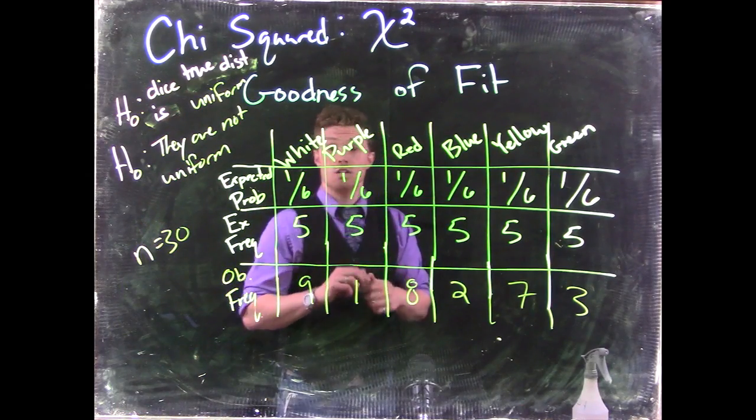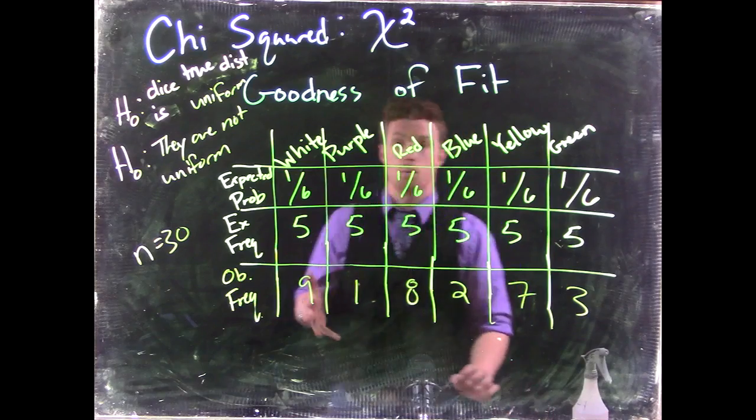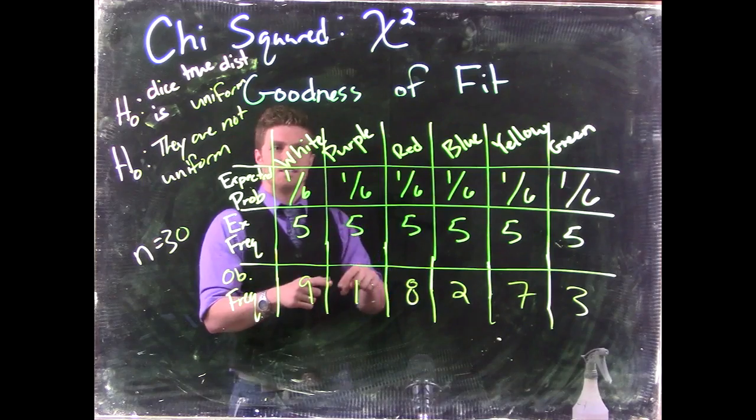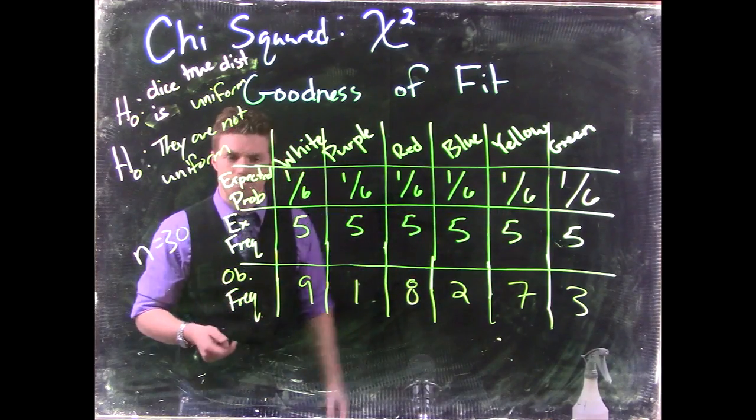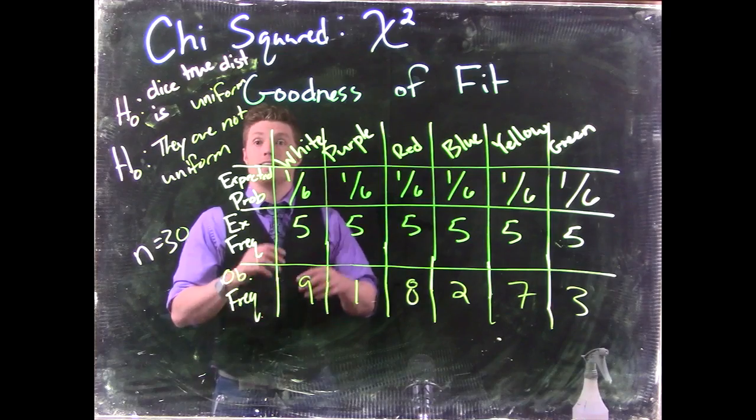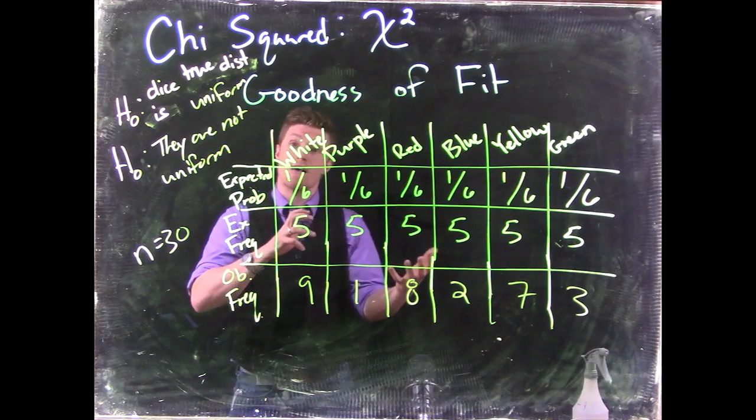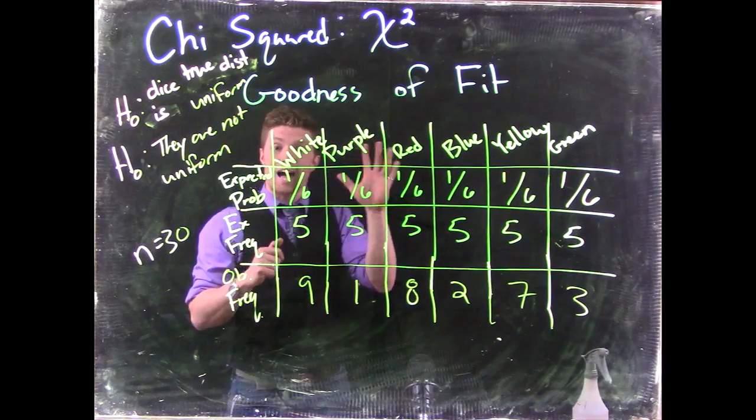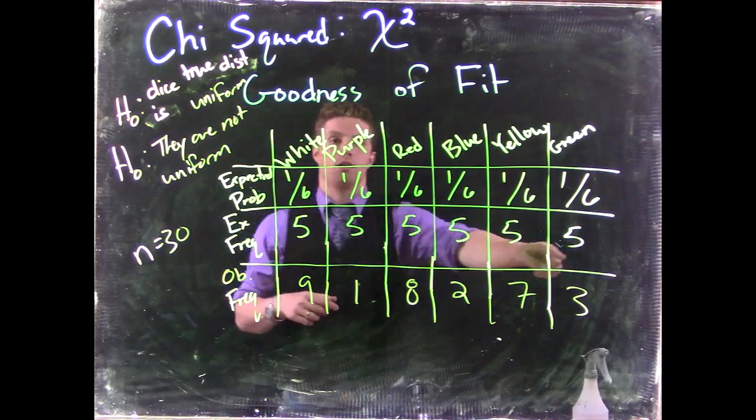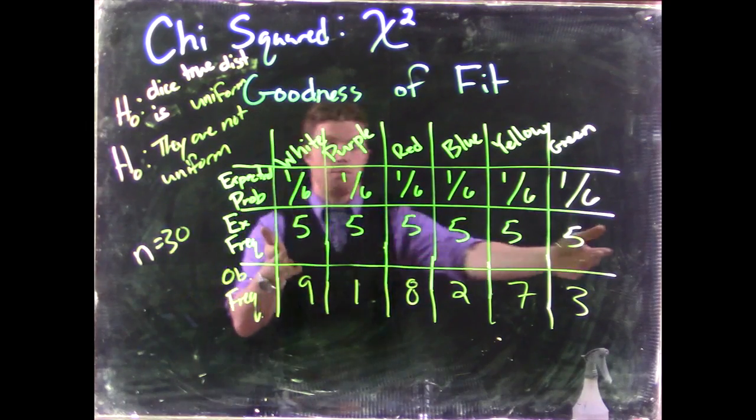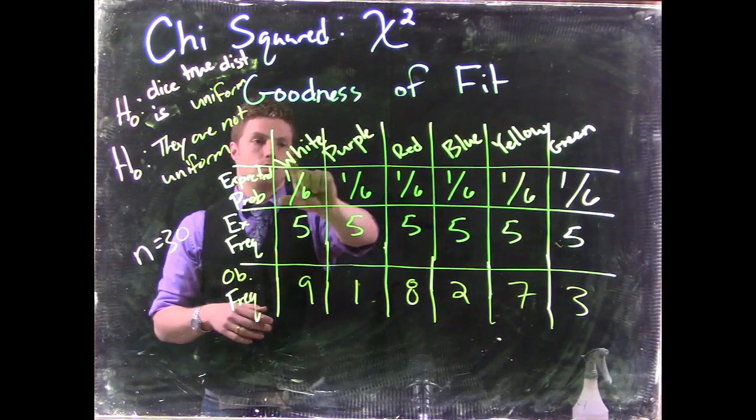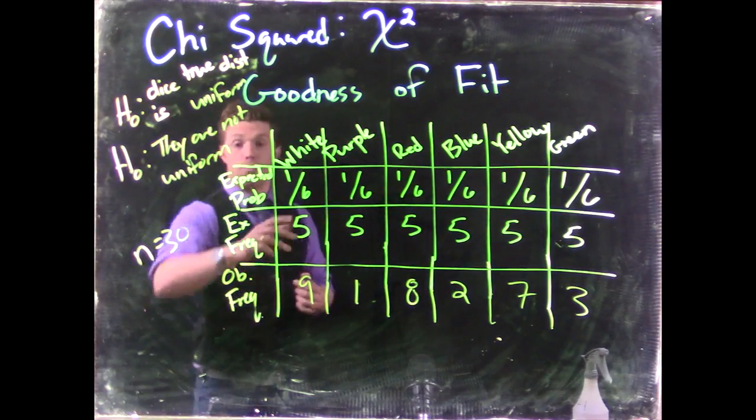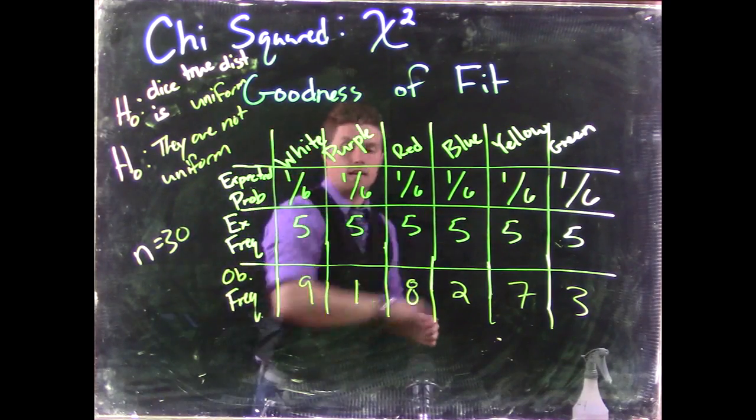If we want to do a goodness of fit, there's a couple of checks that we need to do. First, we need to make sure that each of these outcomes are independent, so that each dice roll isn't changing the next dice roll. And then we want to make sure that the expected frequency needs to be 5 for each of these outcomes. That's why I chose 30. 30 was the minimum sample size for this uniform distribution with 6 different options to get 5 frequency for every single one of these outcomes.